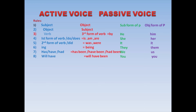Eight rules are done. To summarize: subject becomes object, object becomes subject, verb's third form plus 'by'; first form/do/does → 'is/am/are'; second form/did → 'was/were'; ing → 'being'; has/have/had → 'has been/have been/had been'; will have → 'will have been'. Now rule number nine: 'will' and 'shall'. If you identify 'will' in the sentence, change it to 'will be'; if 'shall' is there, change it to 'shall be'. That's all. No need to check if it's future indefinite or future continuous — just identify 'will' or 'shall' and make the change.